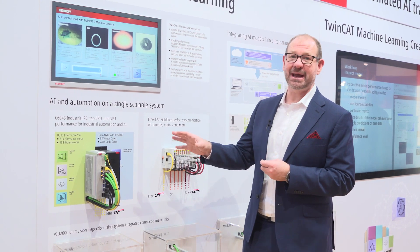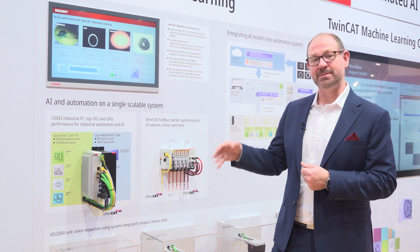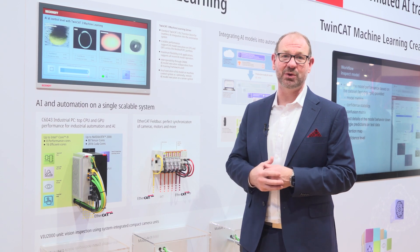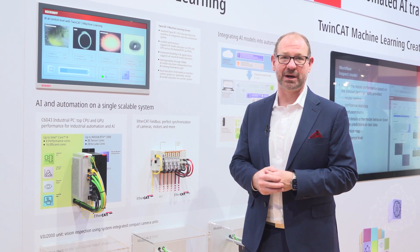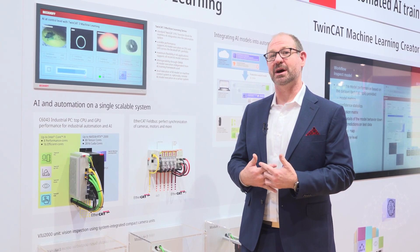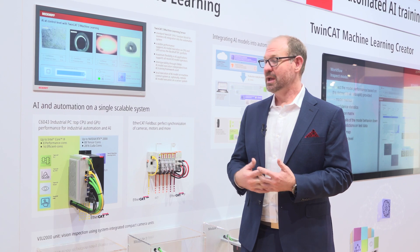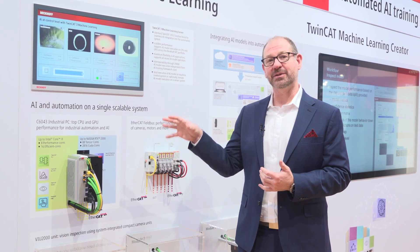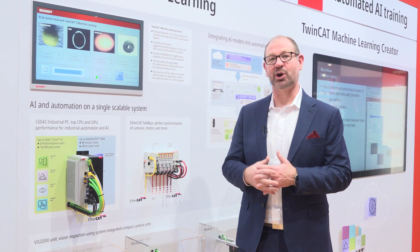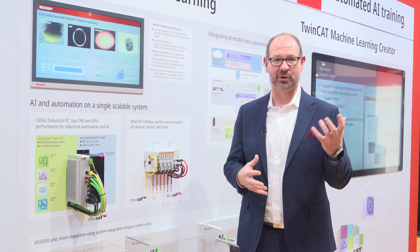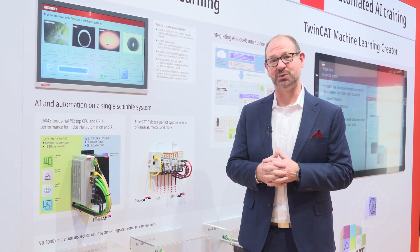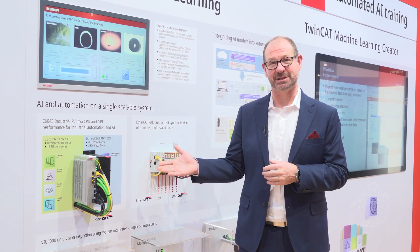We've combined that now with TwinCAT Vision and machine learning algorithms and with GPU-enabled hardware — bigger GPUs for doing the processing of machine vision inside of the PC and the control on one piece of hardware, without having to have separate pieces of hardware for PLC versus GPUs, all combined into one in the C6043.